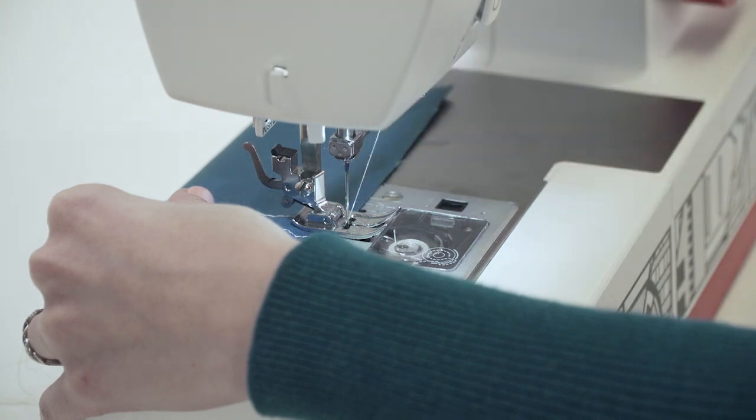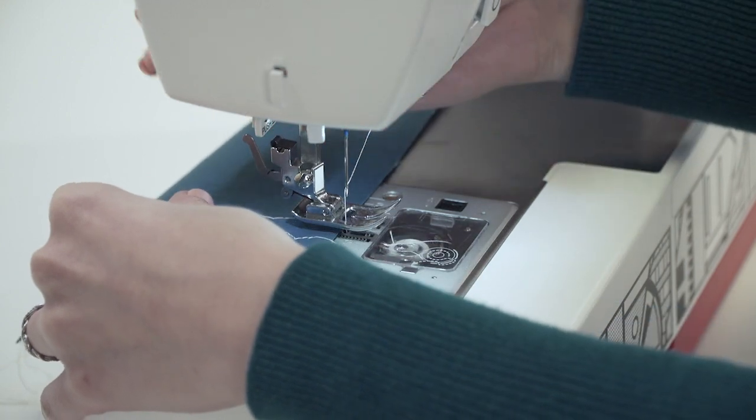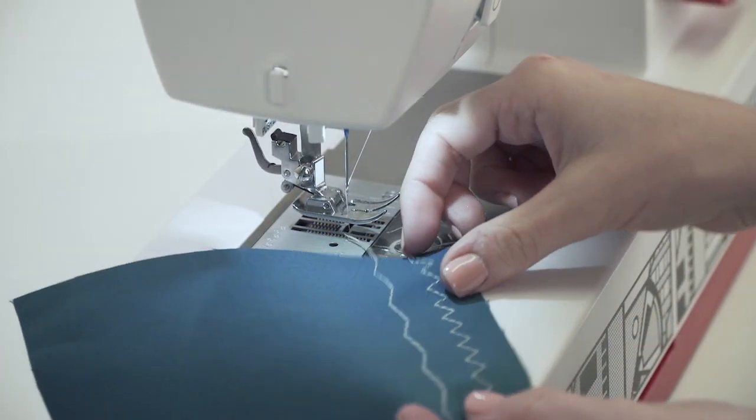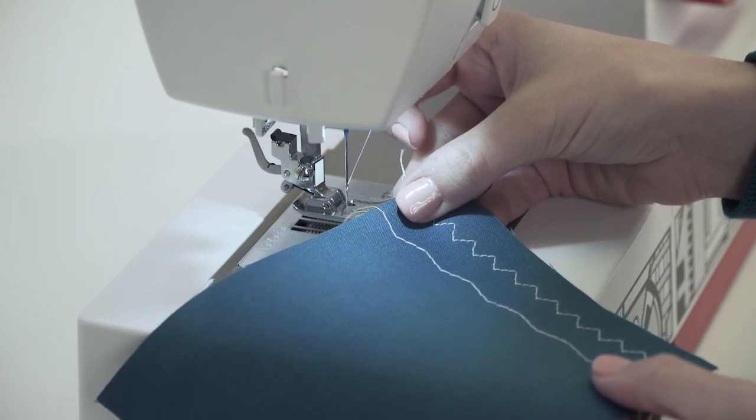Make sure that the needle is up. If it's not, turn the hand wheel towards you. Bring the presser foot up, and this is the same stitch set at a length of 4 and a width of 4.